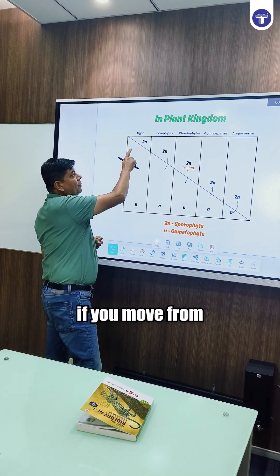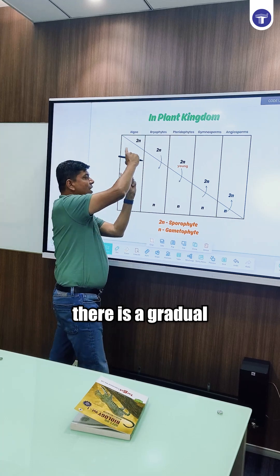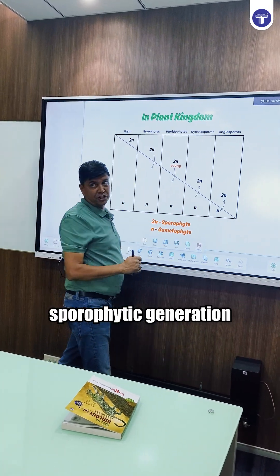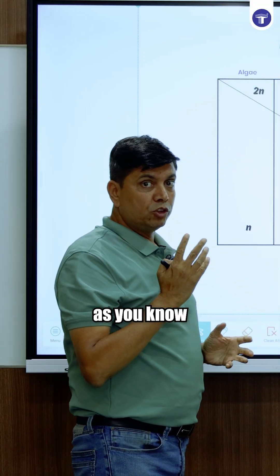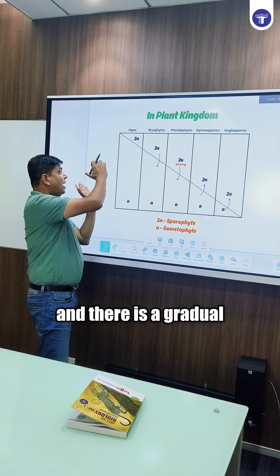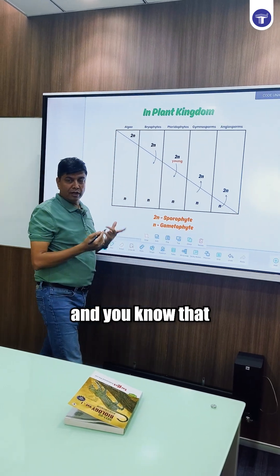if you move from algae to angiosperm, there is a gradual elaboration of sporophytic generation. As you know, sporophyte is the diploid phase, and there is a gradual reduction in gametophyte.